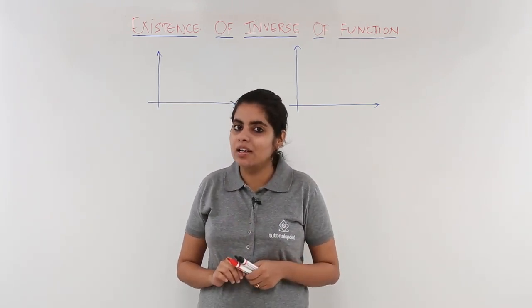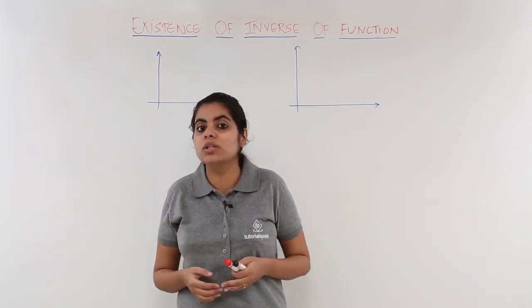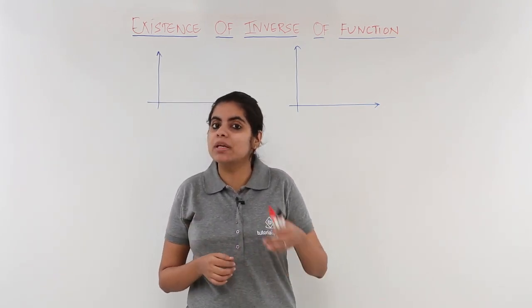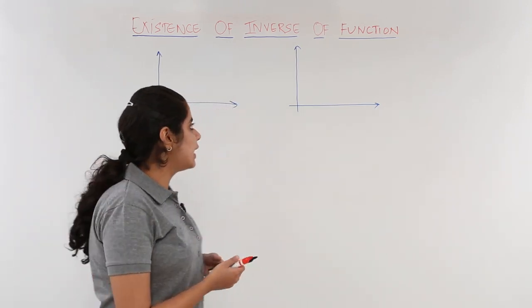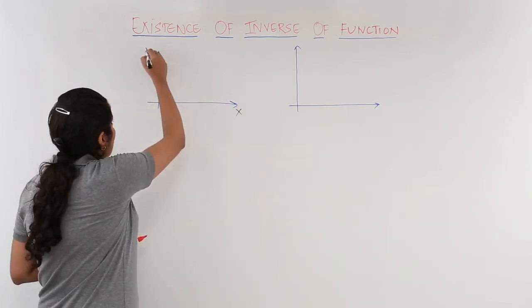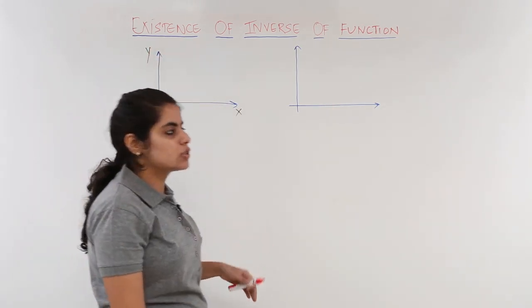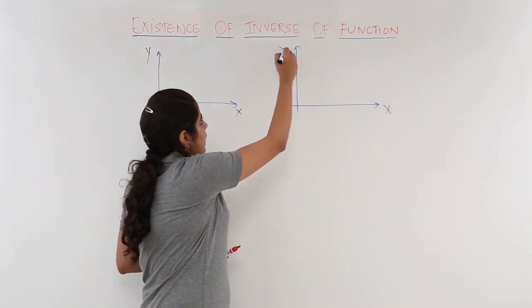So let's get started by understanding what is that condition and how do we actually find the inverse will be taken up in the subsequent video. So I have an outline of a Cartesian plane, x-axis, y-axis. Here also let's draw the second graph side by side, x-axis and y-axis.